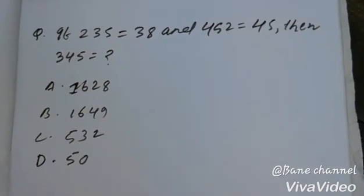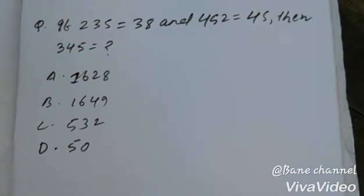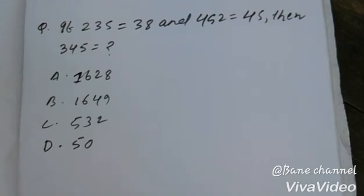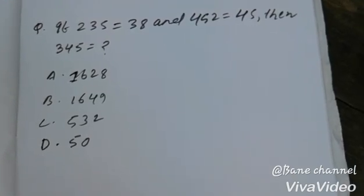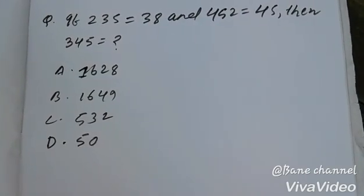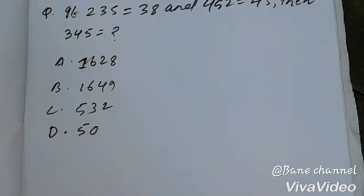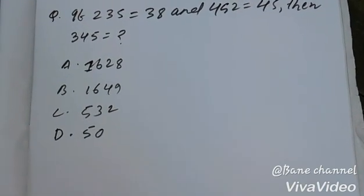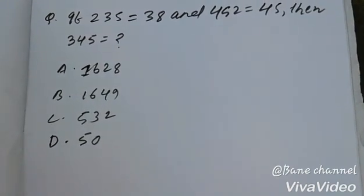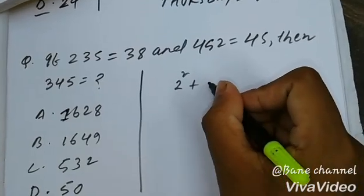If 2, 3, 5 equals 38 and 4, 5, 2 equals 45, then 3, 4, 5 equals what? Options are: A) 2628, B) 96625, C) 5350, D) 50.